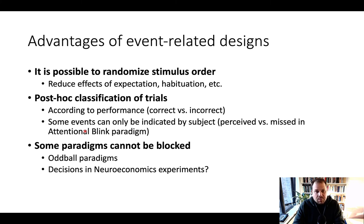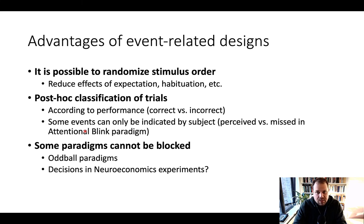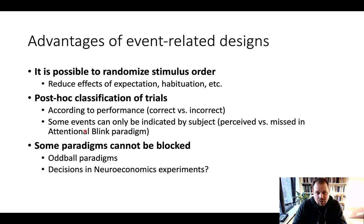You can also do a post-hoc classification of trials — something like correct versus incorrect trials, but it could also be in the case of neuroeconomics, trials in which participants chose to accept or reject a lottery, or trials in which participants made risky versus non-risky choices. Post-hoc meaning you classify the trials based on the participants' choices and performance. There are also some types of paradigms that simply cannot be blocked, such as oddball paradigms where infrequent events occur. Many types of neuroeconomic experiments just don't lend themselves to block designs.